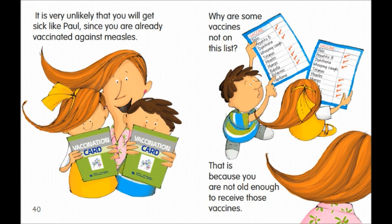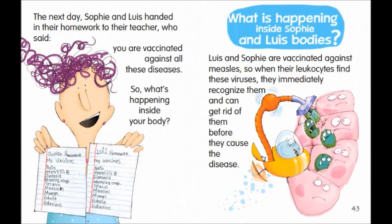Why are some vaccines not on this list? That is because you are not old enough to receive those vaccines. The next day, Sophie and Luis handed in their homework to their teacher, who said: you are vaccinated against all these diseases. So, what is happening inside your body? Luis and Sophie are vaccinated against measles, so when their leukocytes find these viruses, they immediately recognize them and can get rid of them before they cause the disease.